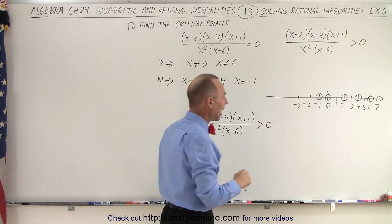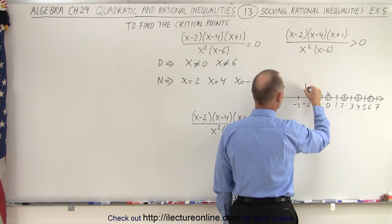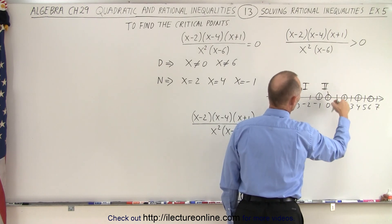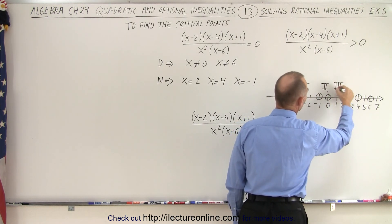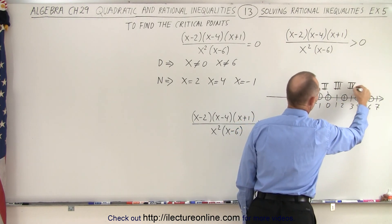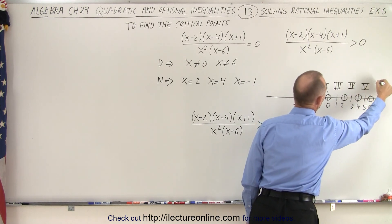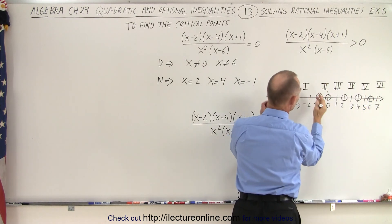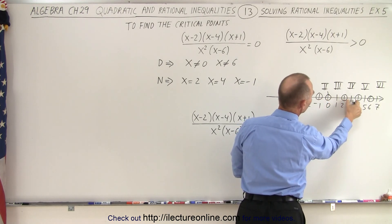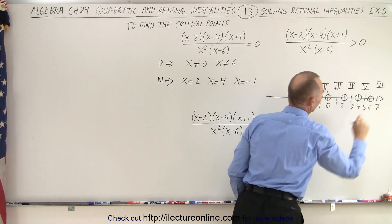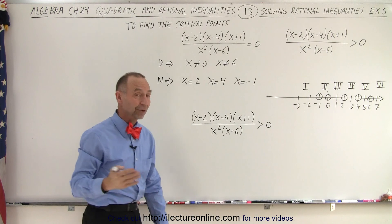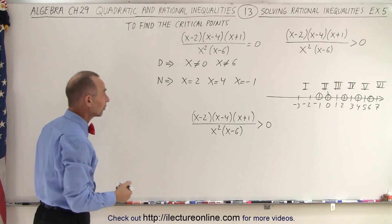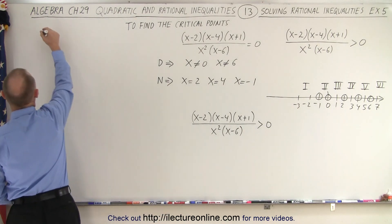We have six regions on the number line. Region number one is to the far left, then region two, region three, region four, region five, and region six out to infinity. For each of those regions, we need to try some test points. Let's start with region number one.